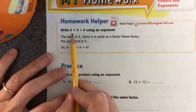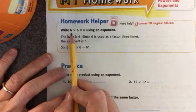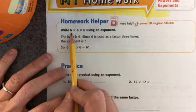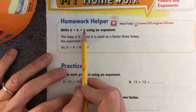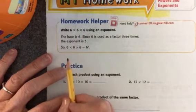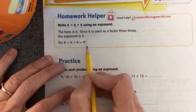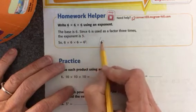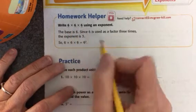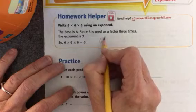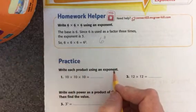When we have a number that repeats itself, that you're multiplying by the same number, like 6 times 6 times 6, you can write it as an exponent. Six is the number that is repeated, so six is the base that you write down, and it is multiplied three times, so three is the exponent, and it is written small next to it like that.